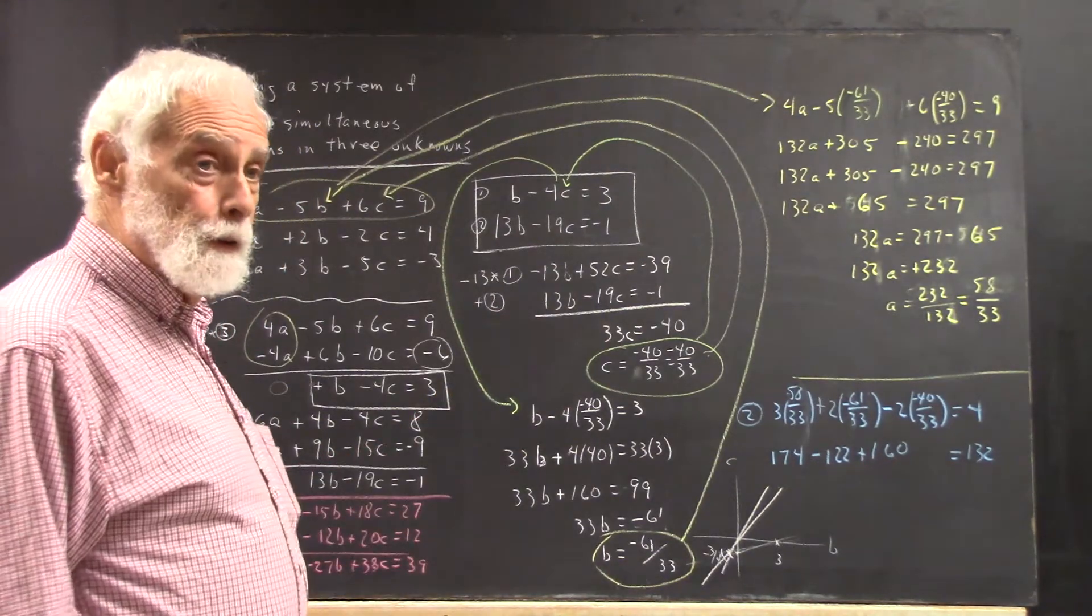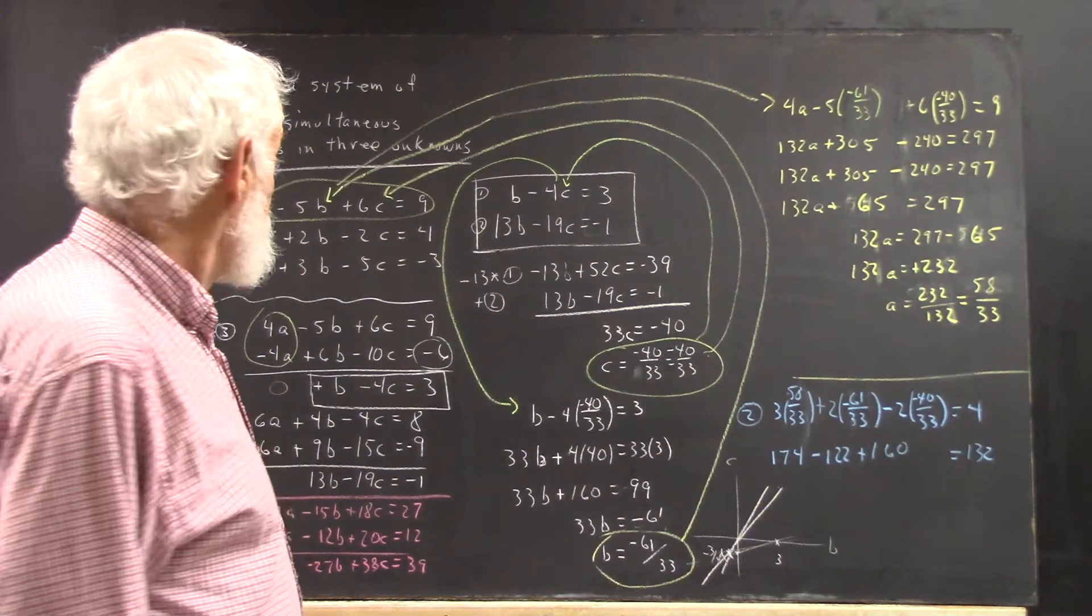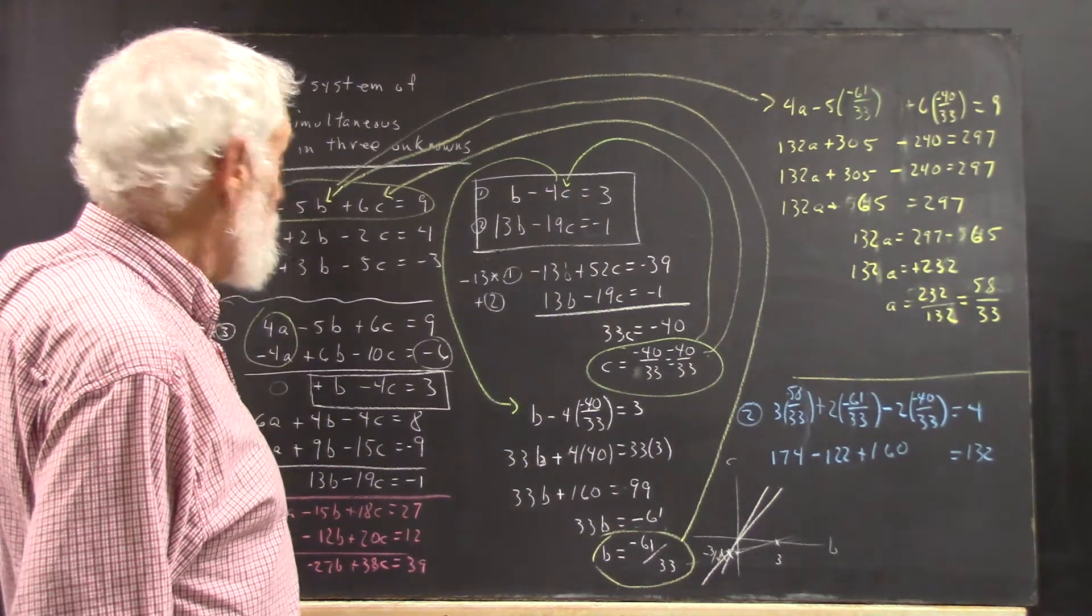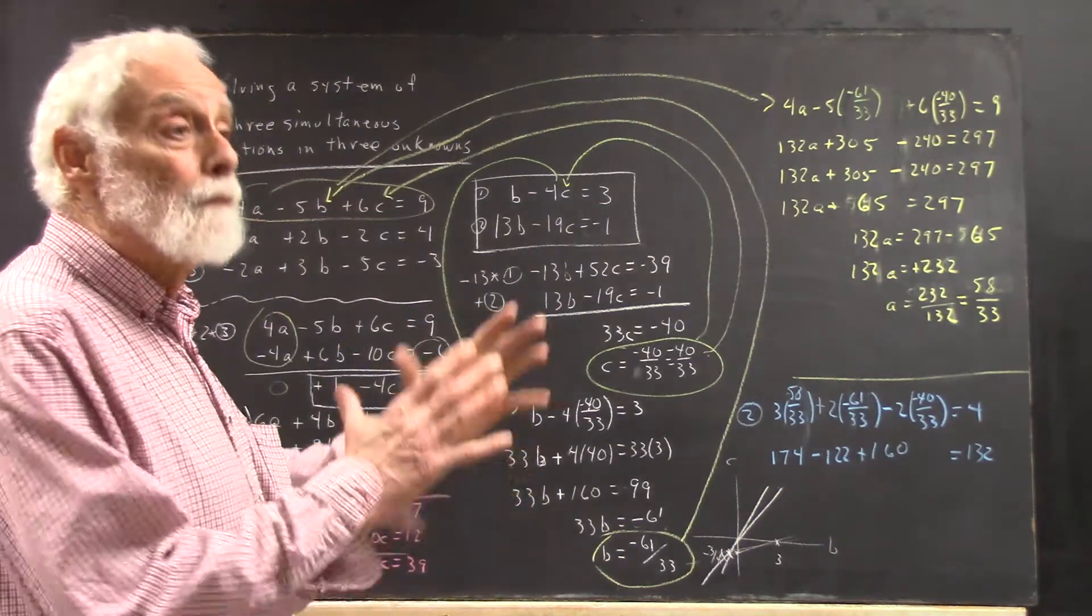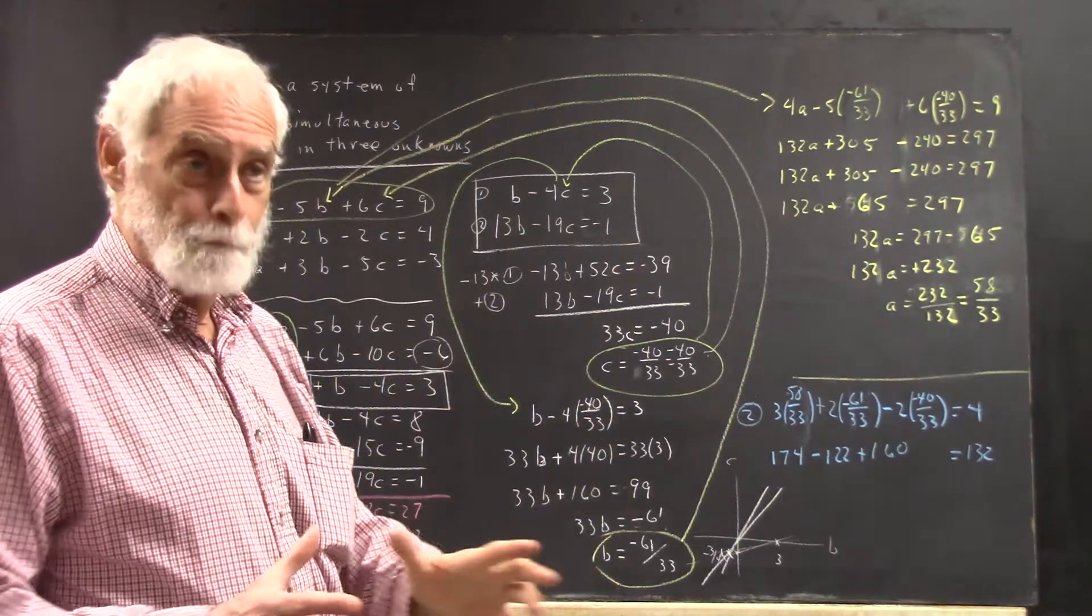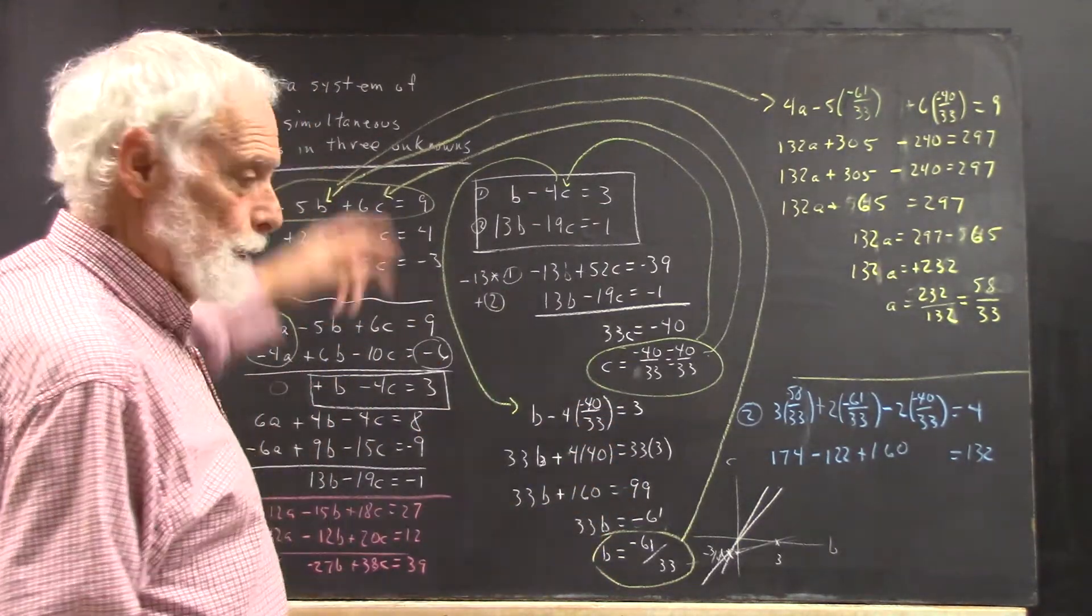At this point, I would simply start over. And I'd eliminate something besides A. I'd eliminate B, and I'd try that. And then I'd eliminate C.